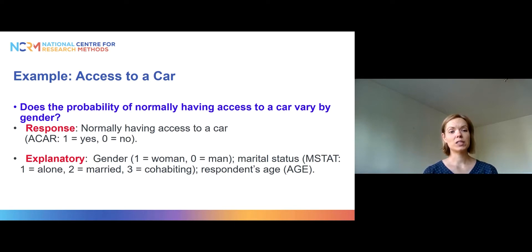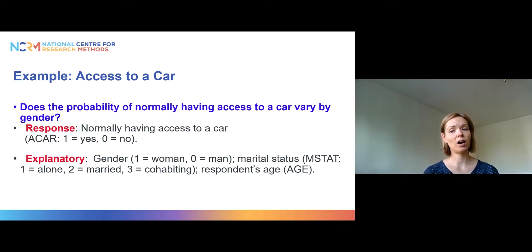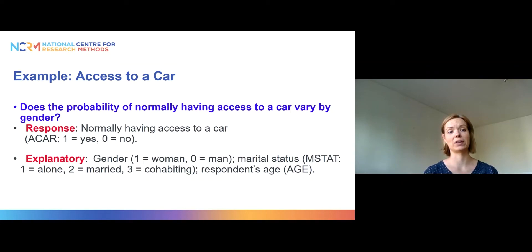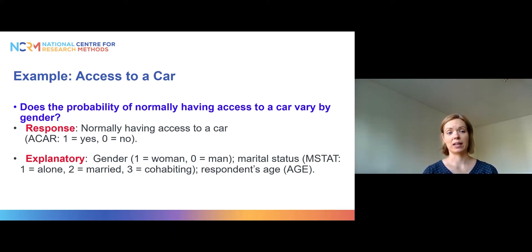Our example today is a relatively simple logistic regression model where we want to study whether the probability of having access to a car varies by gender. Our response variable is whether someone normally has access to a car, yes or no. And we have three explanatory variables: gender, whether someone is a man or a woman; marital status, whether they are alone, married, or cohabiting; and finally their age as a continuous variable.